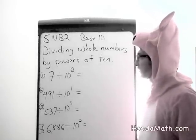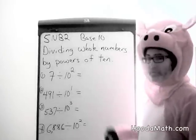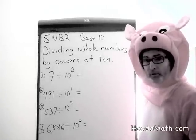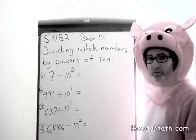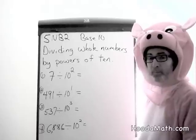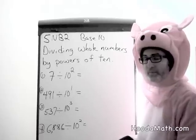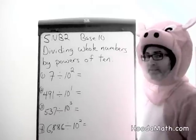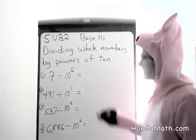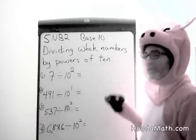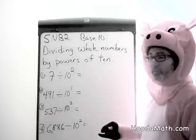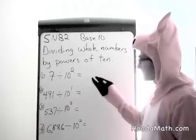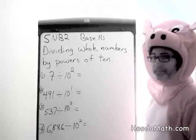Dividing whole numbers by powers of 10. When we multiply whole numbers by powers of 10, and those powers are positive numbers, the numbers become larger. We add zeros and move decimal places to the right.